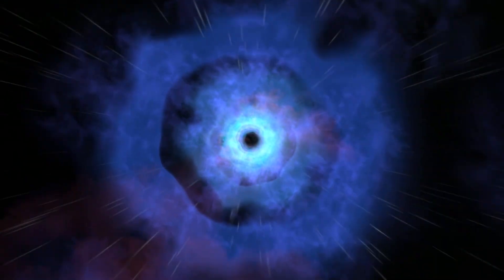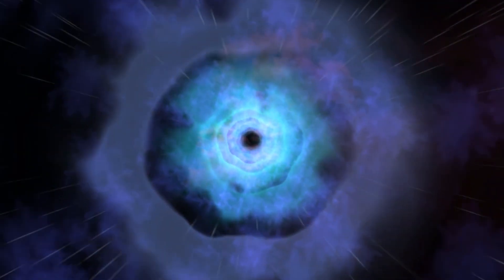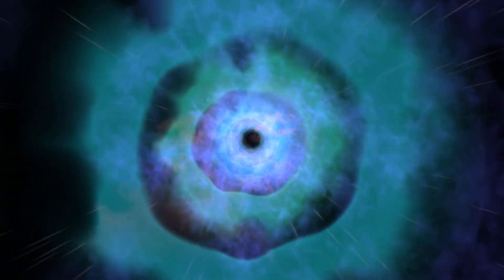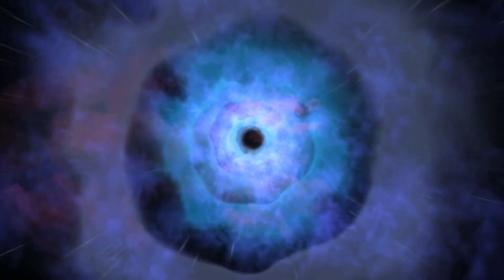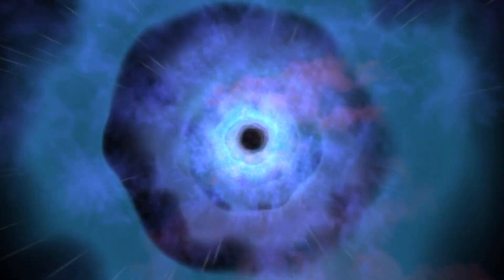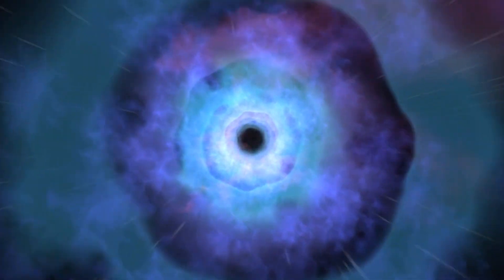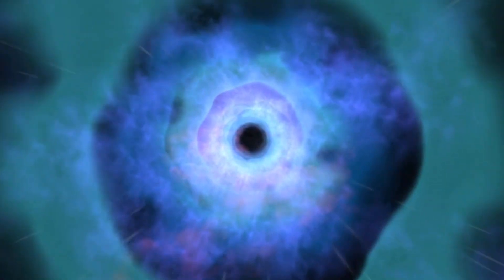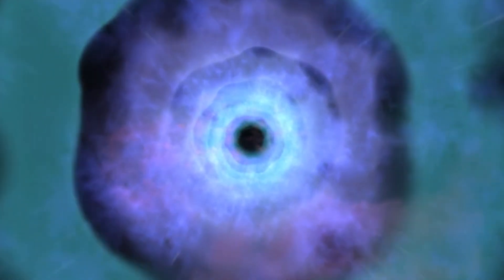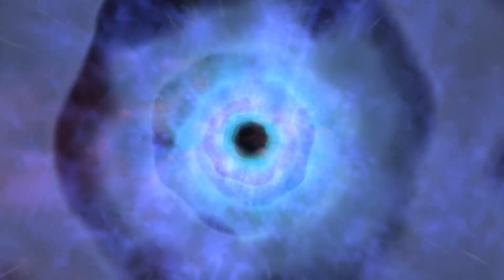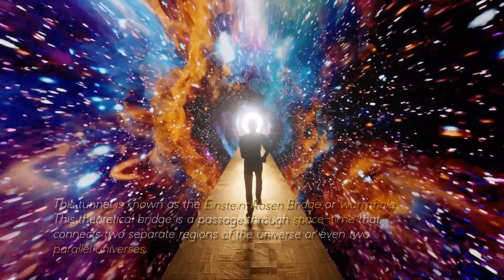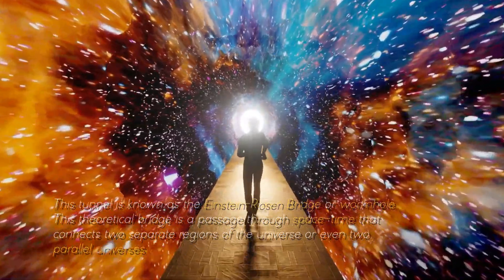You're probably wondering what lies beyond the third layer called the singularity, right? The idea is that instead of being crushed by falling into a black hole, one would be sucked through a tunnel through the ring of fire and emerge through a white hole somewhere else in a parallel universe. This tunnel is known as the Einstein-Rosen Bridge, or wormhole.